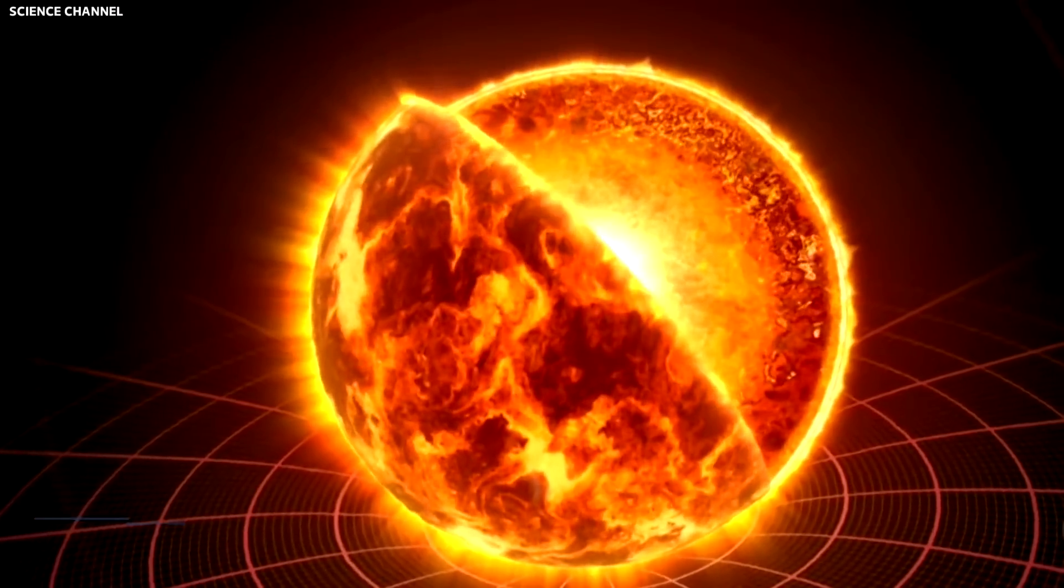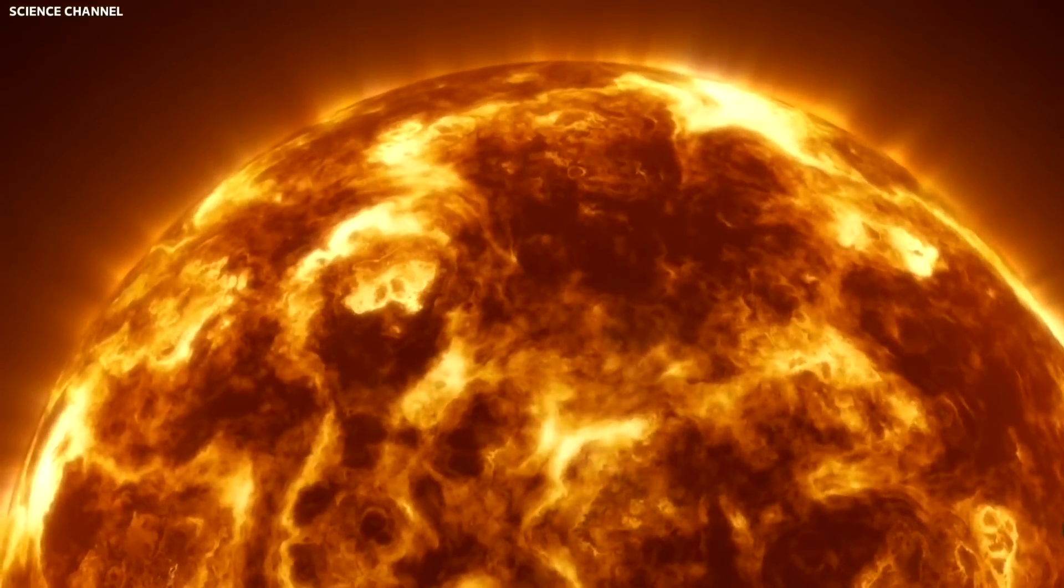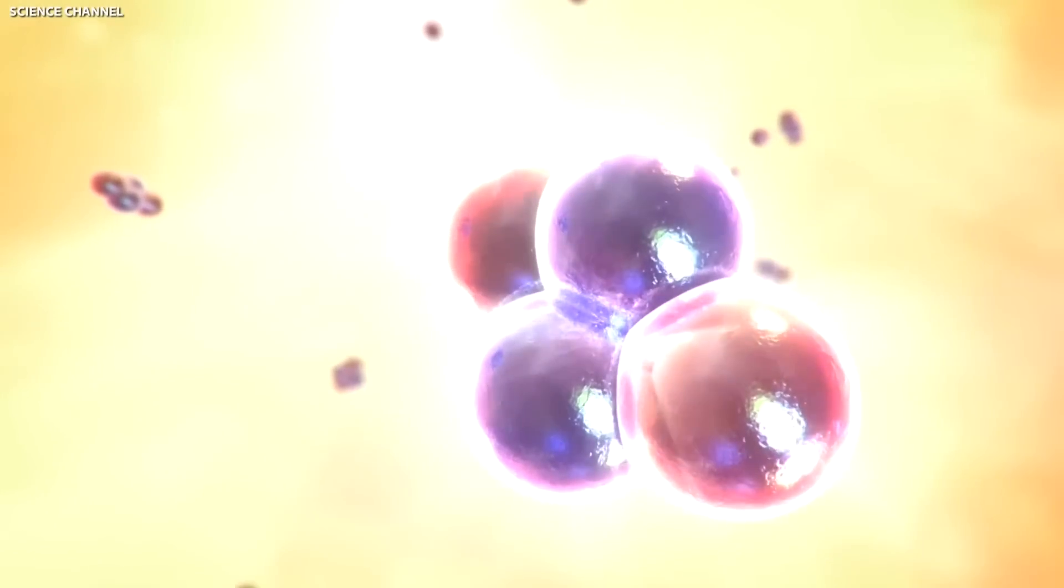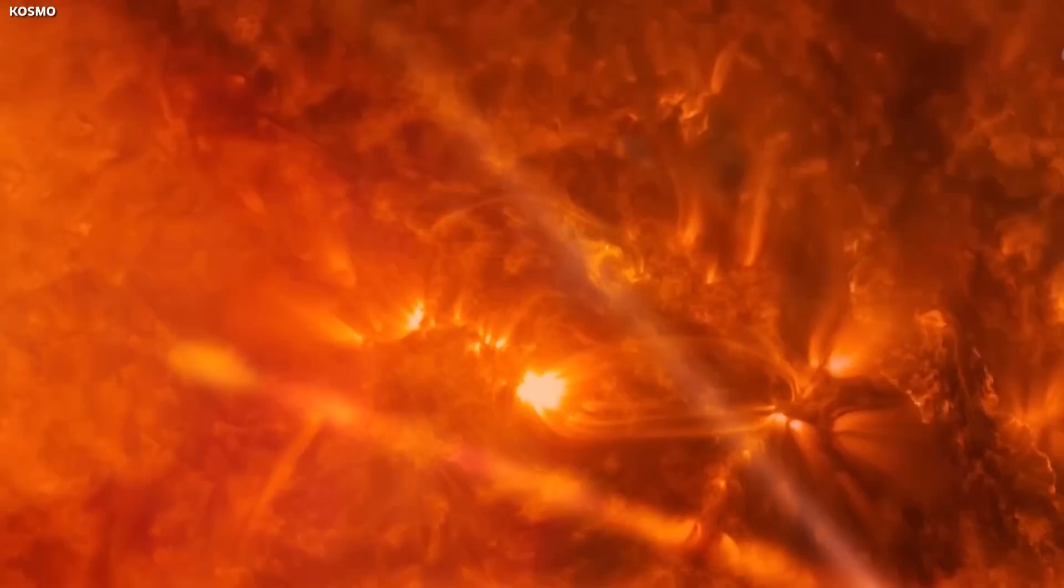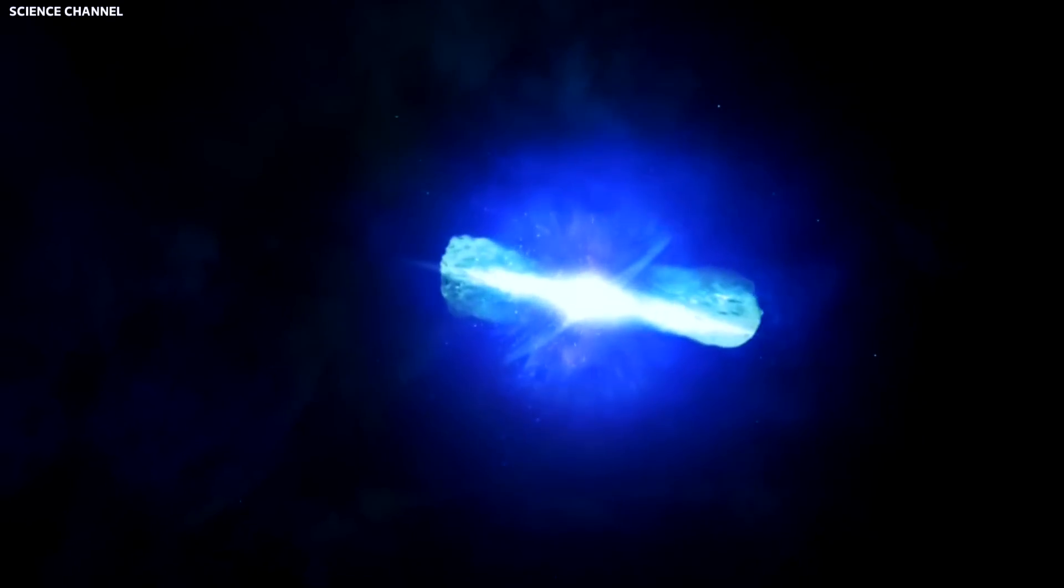As the star fuses heavier and heavier elements, it creates an onion-like structure with different layers burning different elements. Once a massive star starts fusing iron in its core, it's a ticking time bomb. Iron fusion doesn't produce energy. Instead, it consumes it. This leads to a rapid collapse of the core, followed by a rebounding shock wave that results in a supernova explosion.